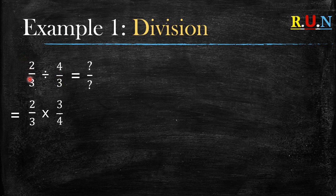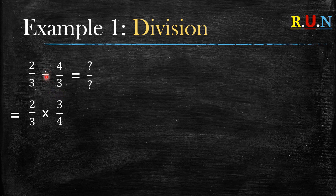The first part of the sum stays the same, but the second part of the sum — whatever was on top goes to the bottom and whatever was at the bottom goes to the top, meaning the numerator becomes the denominator and the denominator becomes the numerator. But this only happens when you change the sign from division to multiplication.